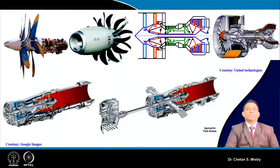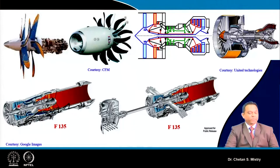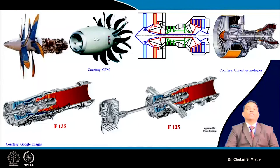The F-135 engine developed by United Technologies Pratt and Whitney is one of the most recent examples where all compressor stages and turbines are counter rotating. This engine is fitted with the fifth generation aircraft, the F-35, proving that counter rotating configuration technology has already been adopted.